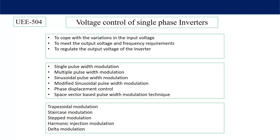Our output voltage frequency is determined by the switching transitions. In a single phase inverter, when switches 1 and 2 are on, switches 3 and 4 are off, and vice versa. We can control these switching transitions to control both output voltage and frequency. We also want a regulated output voltage — whatever variation occurs at the input, the output AC voltage remains constant. Sometimes we want different output voltages, which we can achieve by feeding different switching pulses to the inverter.